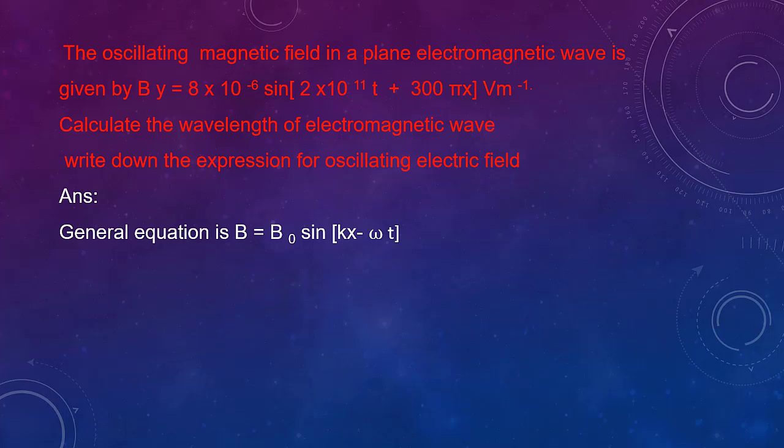k = 2π/λ and ω = 2π/T. To find the wavelength, we use k = 2π/λ. In place of k, what is given here? 300π. So 300π = 2π/λ, from which you can find the value of λ.